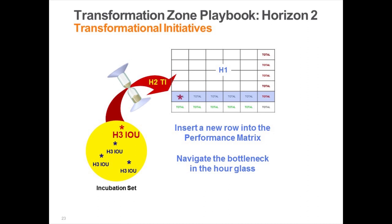Think about how that works. You've got an incubation zone with a bunch of candidate independent operating units in Horizon 3. You've got a performance zone with performance metrics. What you want to do is insert a new row into the performance zone — a net new line of business that investors will see. Amazon was a retail company and all of a sudden there's a net new line of business called Amazon Web Services, which changed the value of the corporation dramatically. Apple was a PC company, then it had a music business, then a smartphone business, then a tablet business. Three new rows in the performance matrix changed the value of the company dramatically.